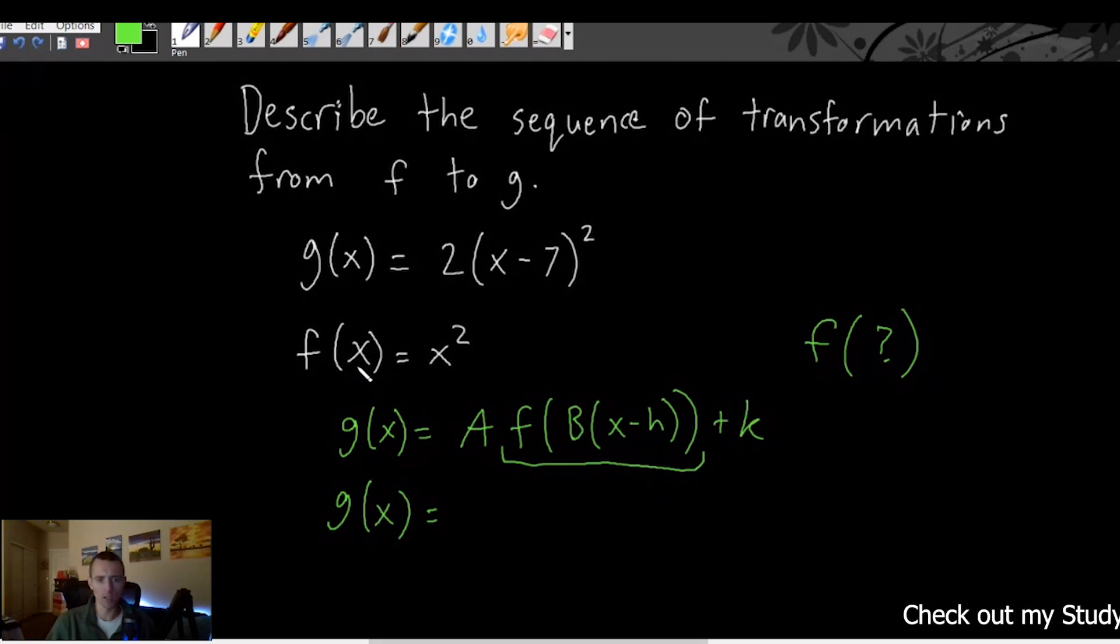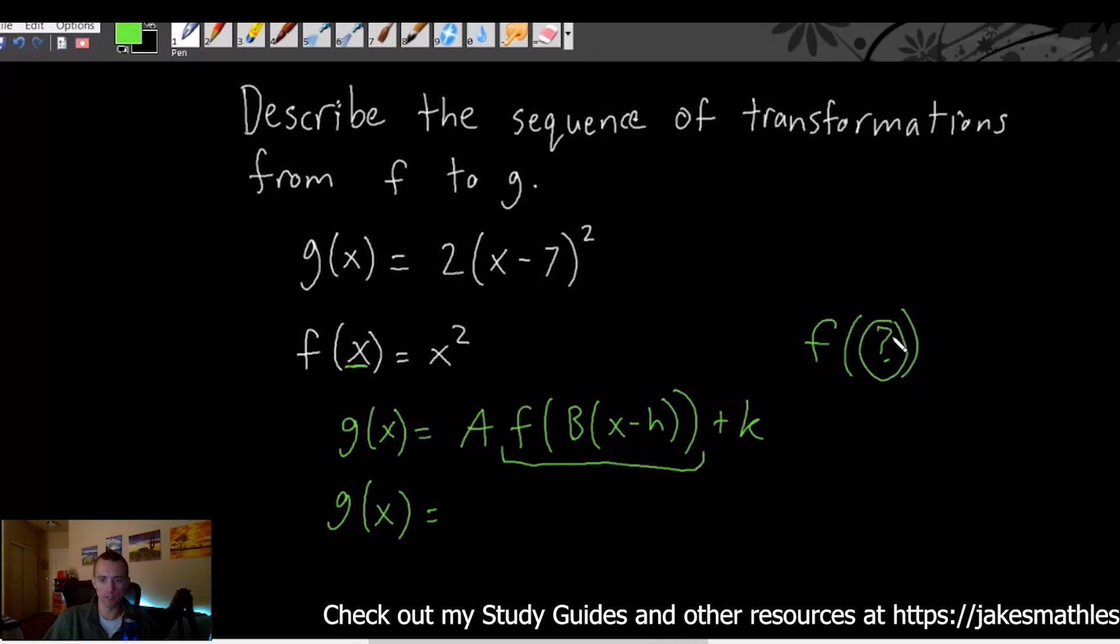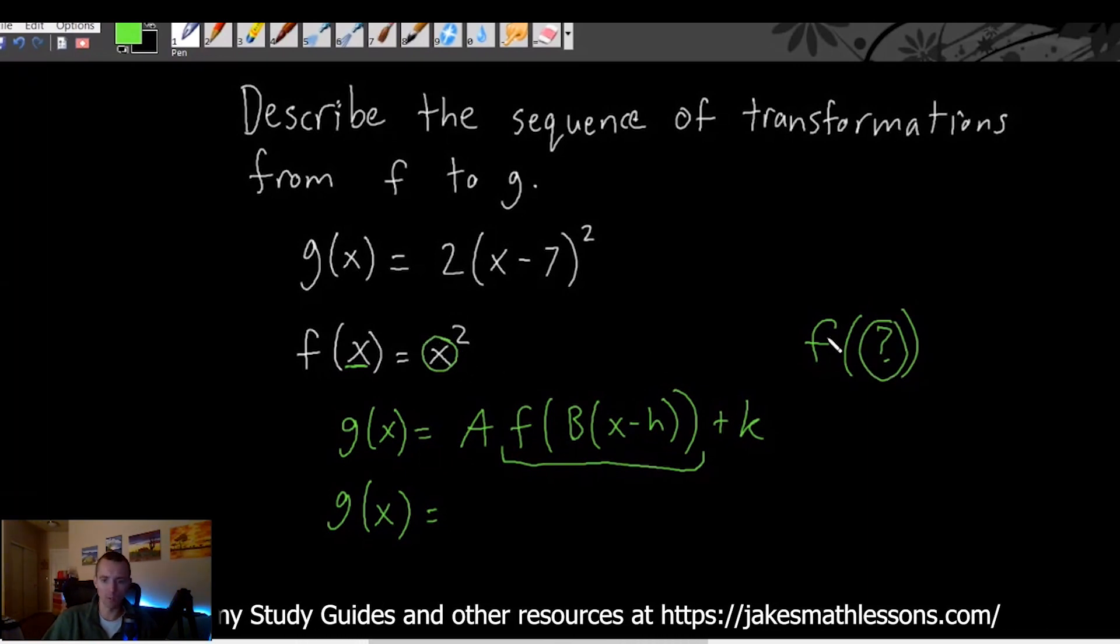Whatever the thing inside your parentheses here when you have f of something, all that's saying is go to your function f(x), wherever you see an x in your function - so in this case we only have a single x which is right here - you're just going to replace that x with whatever is in the parentheses here. So in this case we're going to go to our function f(x) and replace this one x with whatever is in the parentheses here.